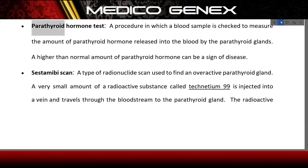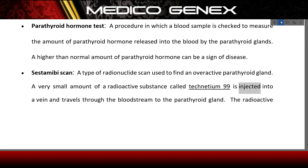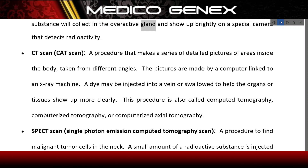Parathyroid hormone test: a procedure in which a blood sample is checked to measure the amount of parathyroid hormone released into the blood by the parathyroid glands. A higher than normal amount can be a sign of disease. Sestamibi scan: a type of radionuclide scan used to find an overactive parathyroid gland. A small amount of radioactive technetium-99 is injected into a vein and travels through the bloodstream to the parathyroid gland, where it collects in the overactive gland and shows up brightly on a special camera.